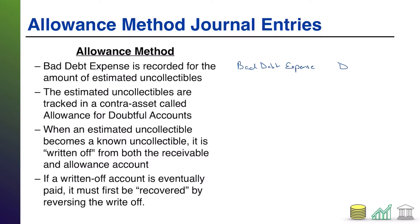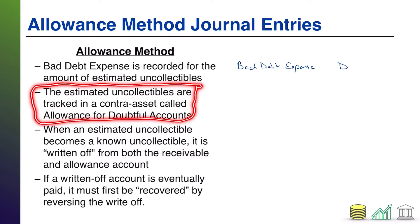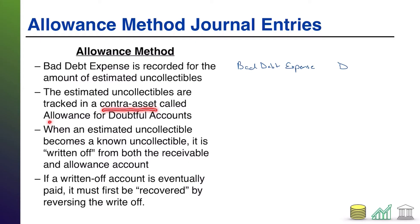We need a credit for this journal entry, and that's where the second bullet comes in. When you're using the allowance method, the estimated uncollectibles are tracked on the balance sheet in a contra asset account known as the allowance for doubtful accounts. So the credit in this journal entry is allowance for doubtful accounts.